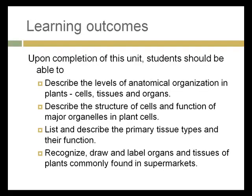This week we're going to get into three levels of anatomical organization in plants: cells, tissues, and organs. Probably all of you are familiar with plant organs — leaves, roots, stems, flowers, etc. Tissues are the component parts of those, and cells are the basic unit of structure. It's really important to understand a little bit of anatomy going into an introduction to horticulture class.